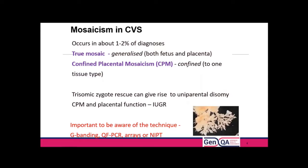Chromosome analysis from cultured cells will detect pseudomosaics that have arisen purely in culture and are not representative of the actual genetic background in the CVS itself. There are various guidelines that explain the nature of that. A true mosaic will be representative of the fetus itself and not just of the placenta that you're sampling with the CVS.